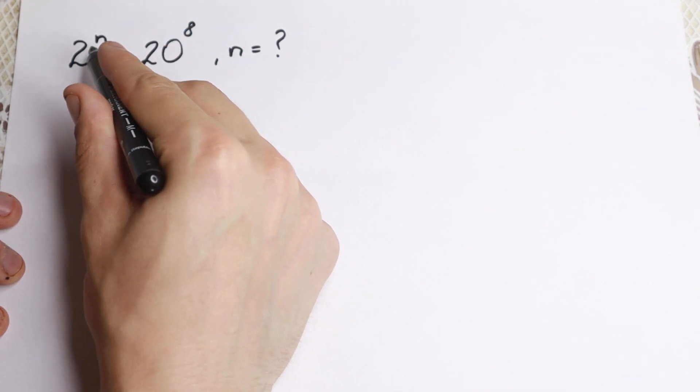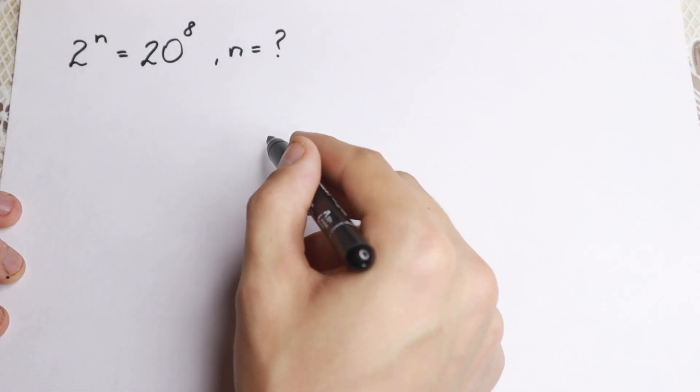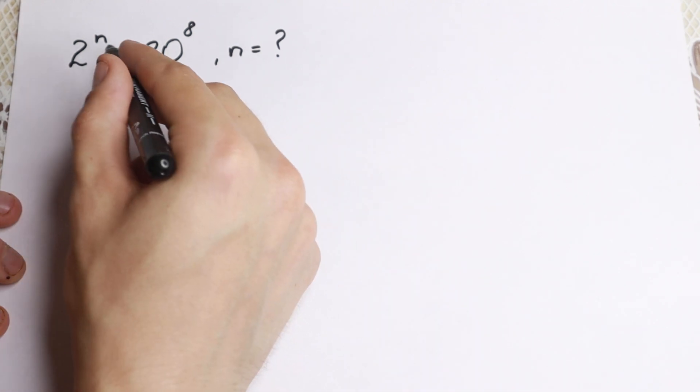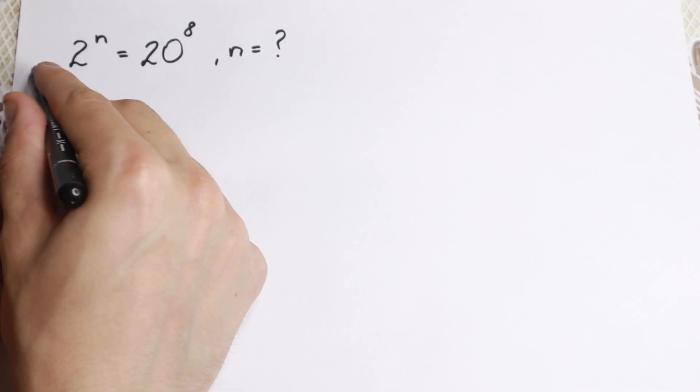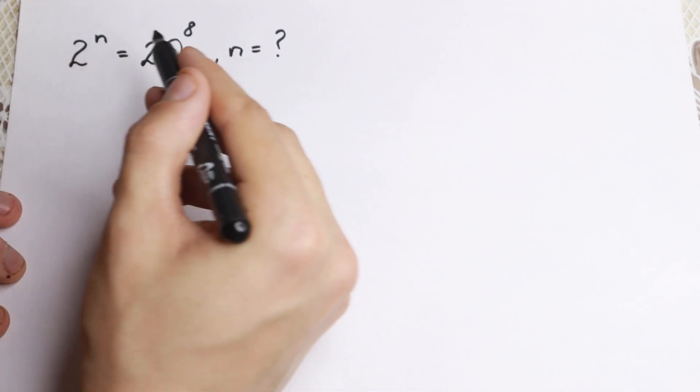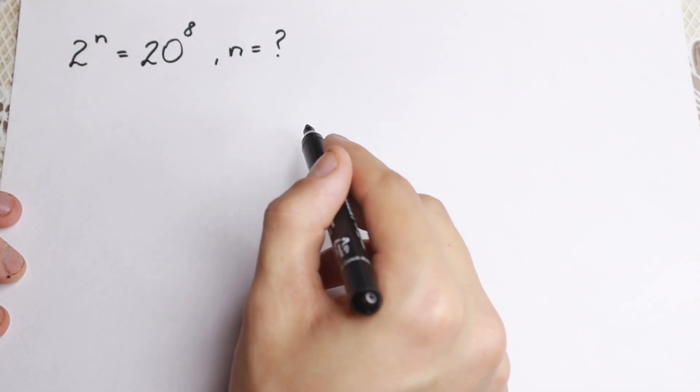First of all we have power, we have exponent right here, we have a variable that we need to find, so it's really good to work with not powers but a number that we multiply, so it's really good to take log on both sides.